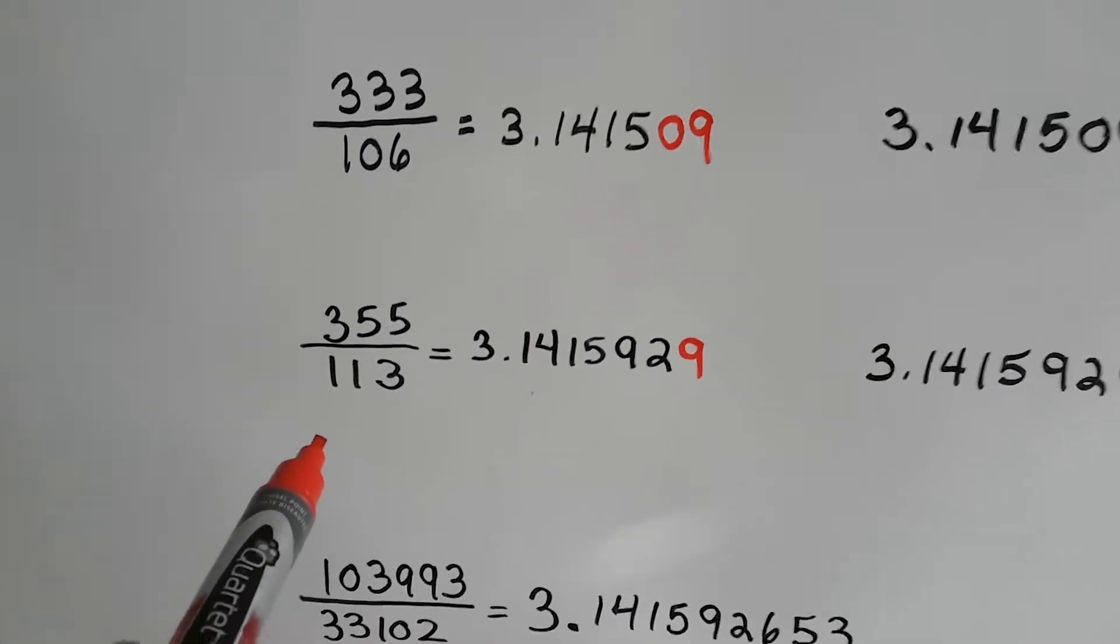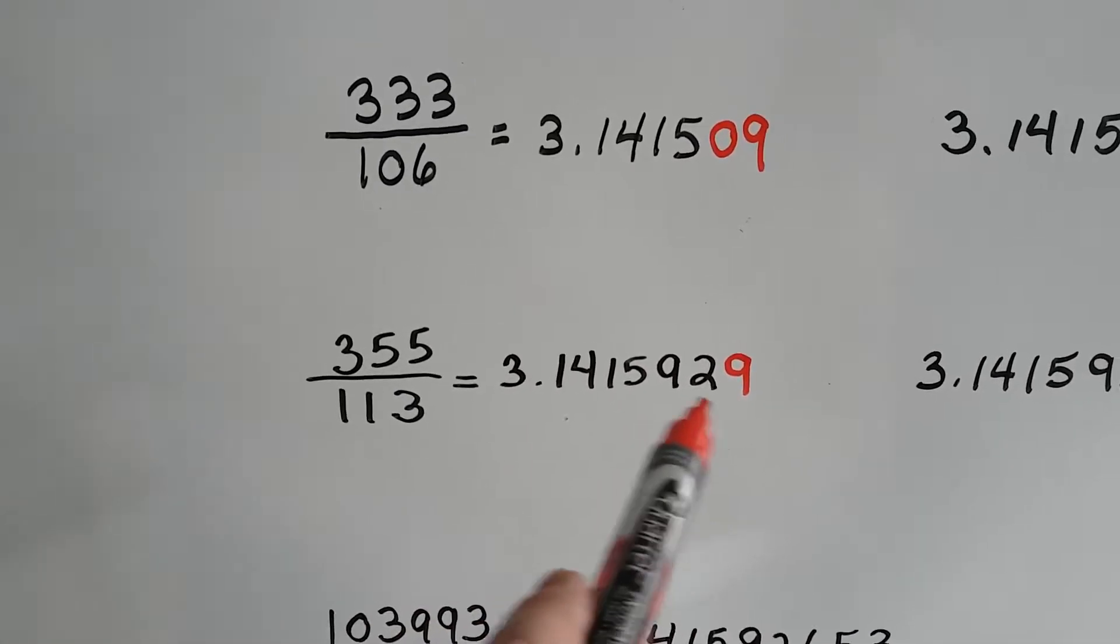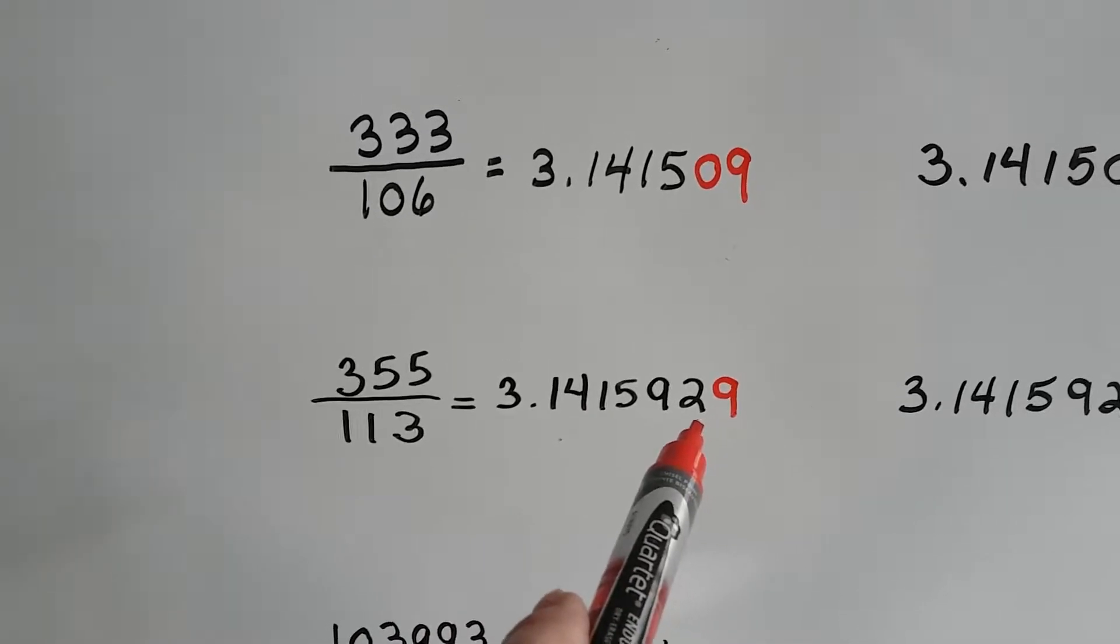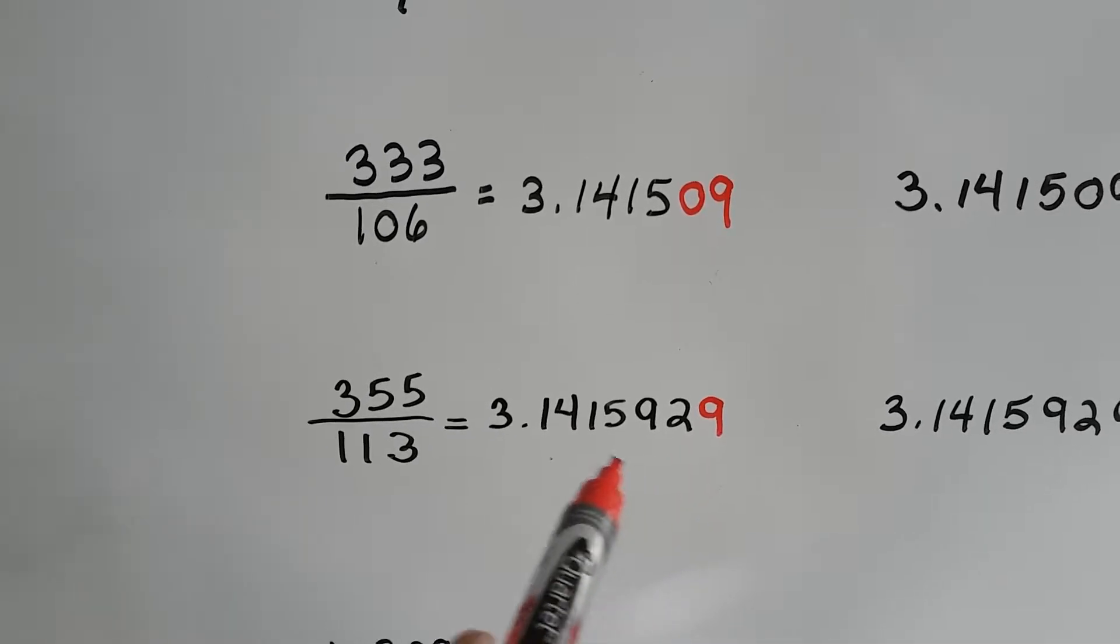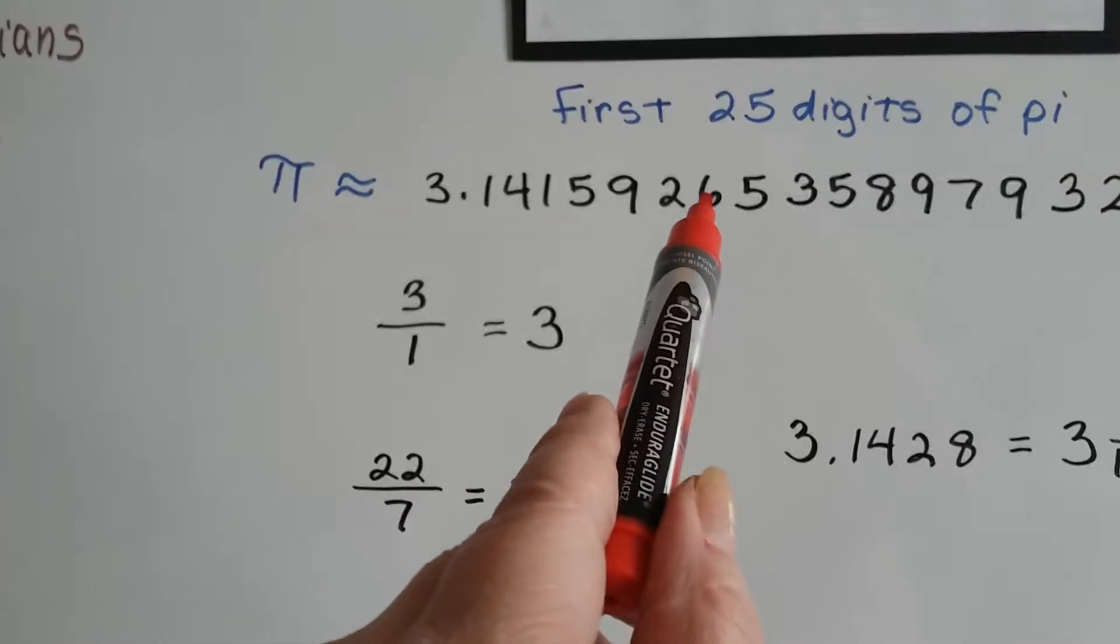You could do 355 over 113. And, this is not the exact numbers for pi. This 9 is wrong. It should say, 1, 4, 1, 5, 9, 2, 6.